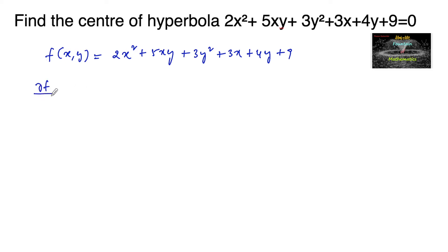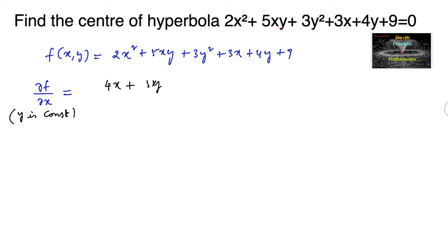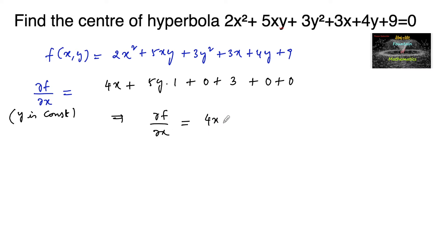Let us partially differentiate with respect to x. When doing partial differentiation with respect to x, we treat y as a constant. So the differentiation of 2x² is 4x, and 5xy — since y is constant — gives 5y. The differentiation of 3y² is 0 (constant), 3x gives 3, 4y is 0, and 9 is 0. So ∂f/∂x = 4x + 5y + 3.